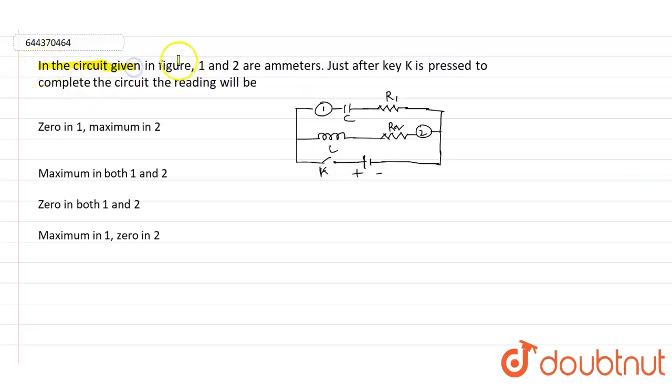So guys, here in this question it is given that in the circuit given in figure, 1 and 2 are ammeters. Just after the key K is pressed to complete the circuit, the reading will be? So this is the question that he has given. He is saying that if this switch K is closed, what is the reading will be shown in both the ammeters 1 and 2.